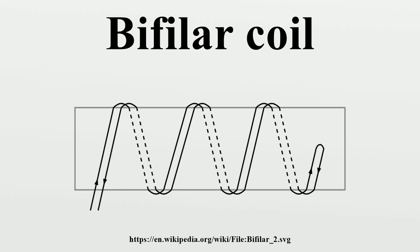A bifilar coil is an electromagnetic coil that contains two closely spaced parallel windings. In engineering, the word bifilar describes wire which is made of two filaments or strands. It is commonly used to denote special types of winding wire for transformers. Wire can be purchased in bifilar form, usually as different colored enameled wire bonded together.